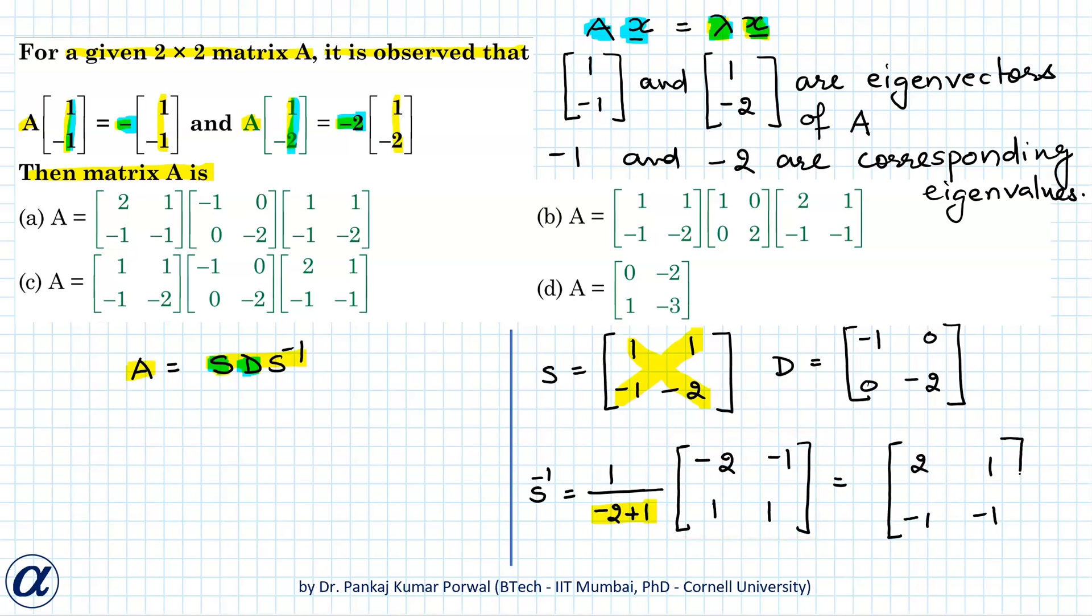[[1, 1], [-1, -2]] times [[-1, 0], [0, -2]] times [[2, 1], [-1, -1]]. So here my option C is correct.